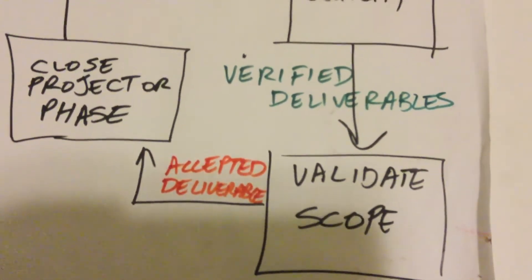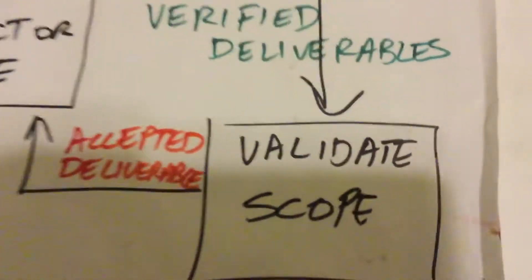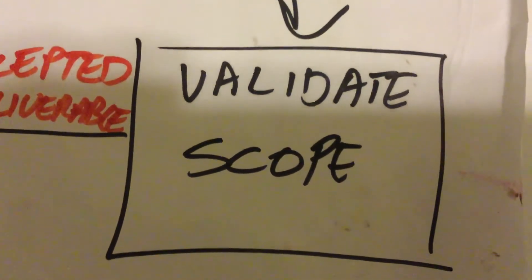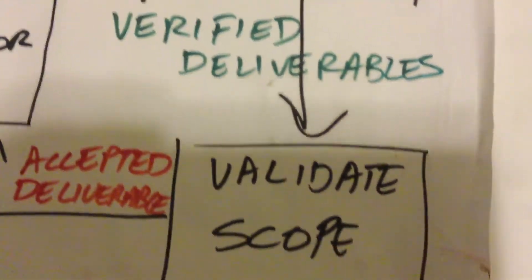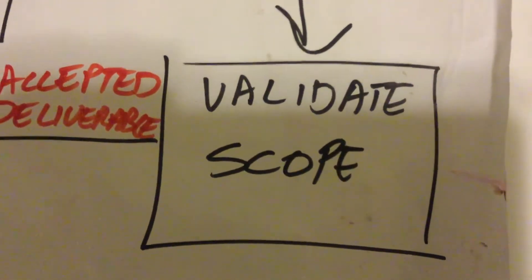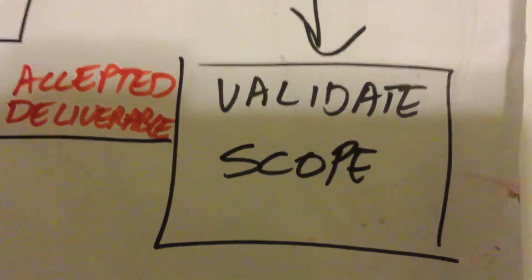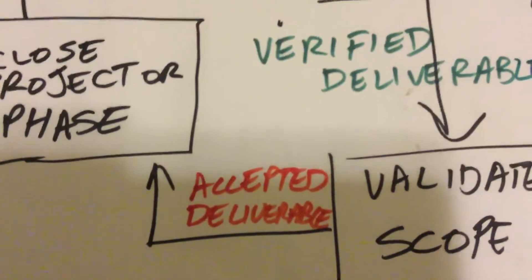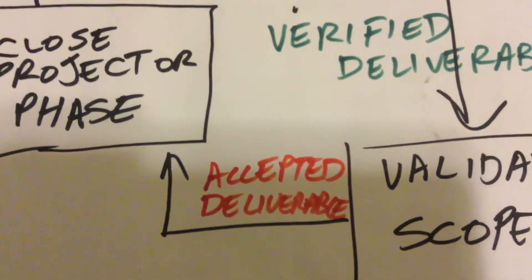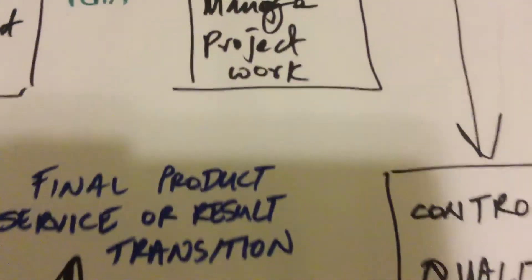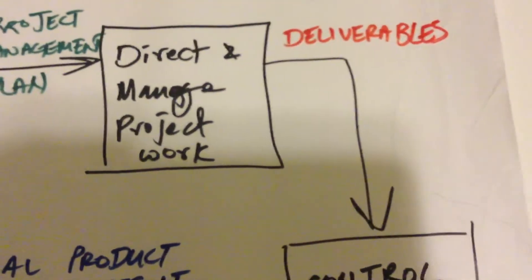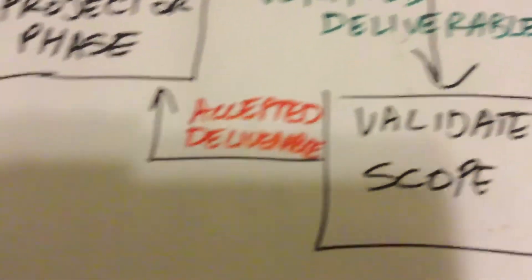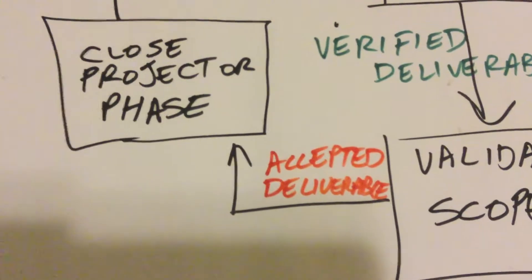Verified deliverables go to the validate scope process. In validate scope, this is where your customer will check that verified deliverable. And if the deliverable is found to be good for the customer's use and they are happy with it, then we end up getting an accepted deliverable. So you can see this deliverable, verified deliverables, accepted deliverables cycle is very important.